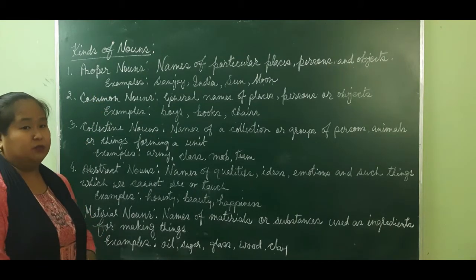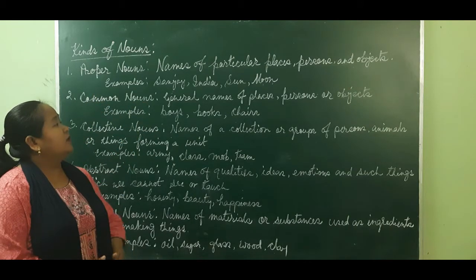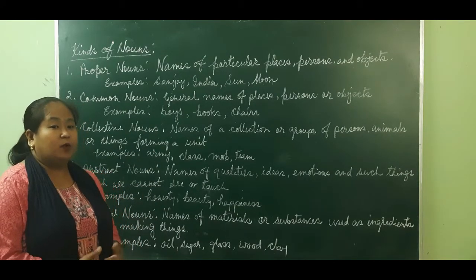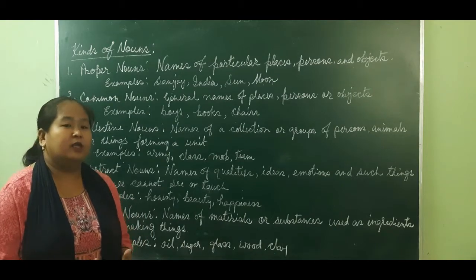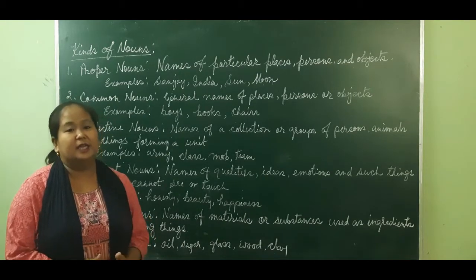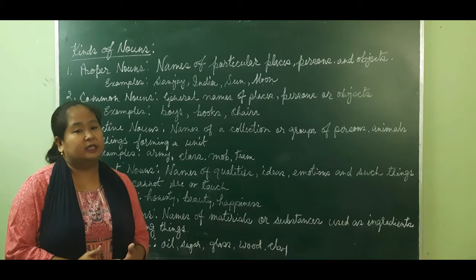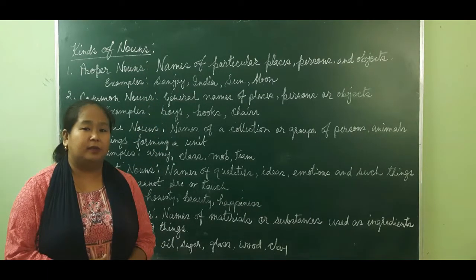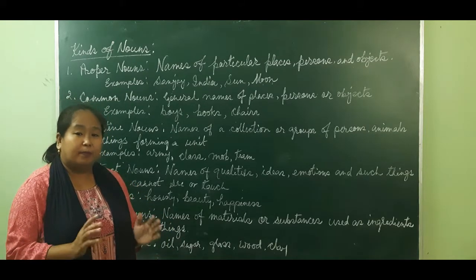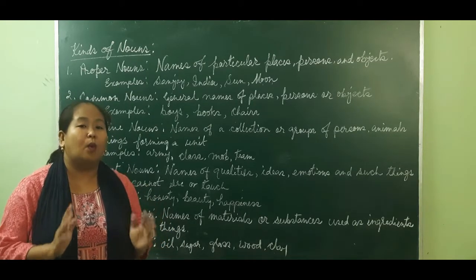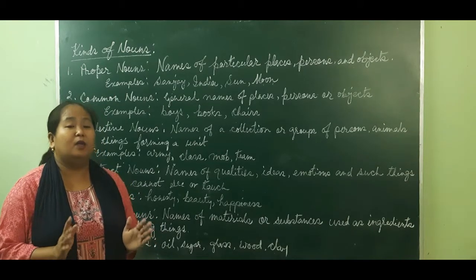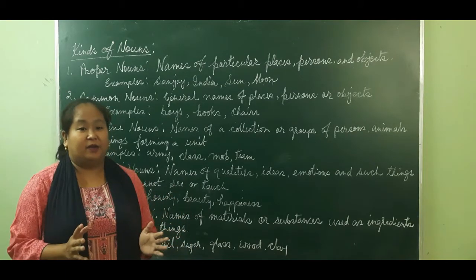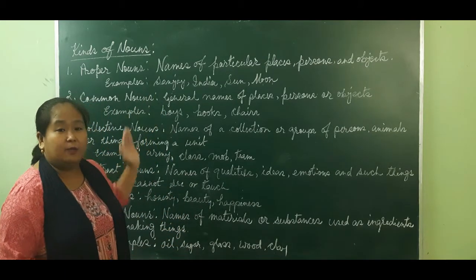Number one: proper nouns. Names of particular places, persons, and objects are called proper nouns. So a proper noun names a particular person, place, or object. For example, Sanjay — the name Sanjay can be given to many boys, but the person Sanjay is just one of his kind. There is no other Sanjay. So Sanjay is a proper noun.